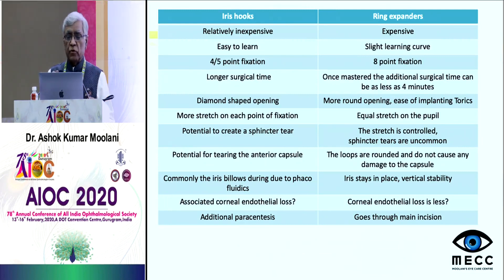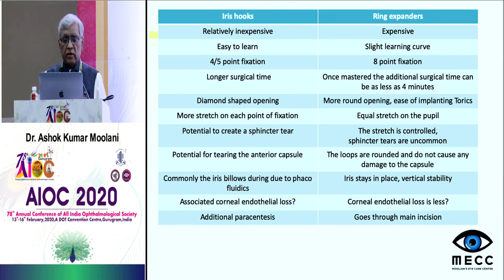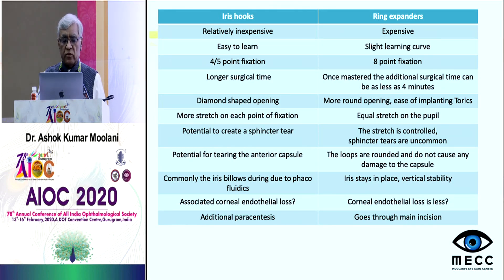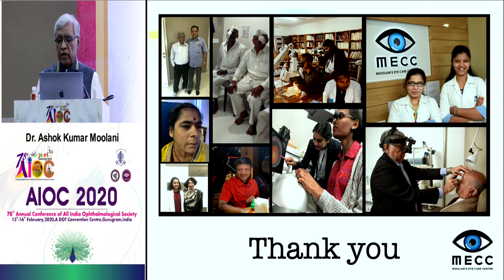Comparing iris hooks to pupil expanders like the Malyugin ring: iris hooks are inexpensive and easy to learn. They provide 4–5 point fixation compared to 8-point fixation with the Malyugin ring. Iris hooks take longer surgical time. The Malyugin ring, once mastered, takes minimum time and provides an almost round pupil. Iris hooks cause more stretching and damage to the iris sphincter, while the Malyugin ring causes minimal trauma to the pupillary margin. The Malyugin ring also provides vertical stability and goes through the main incision, whereas iris hooks require additional paracenteses. In summary, the Malyugin ring is my preferred pupil expander.